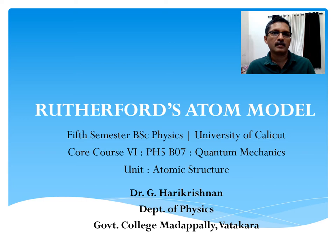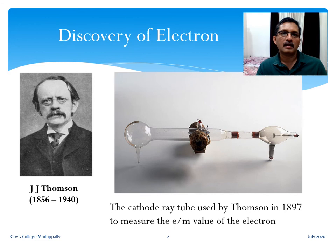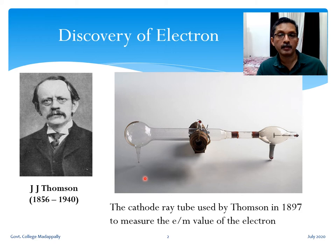Hello. In the unit on atomic structure, in today's class we will discuss Rutherford's atom model. Let us start with the discovery of the electron by J.J. Thomson in 1897. In the figure we can see the cathode ray tube used by Thomson for the measurement of charge-to-mass ratio, or e/m ratio, of the electron.